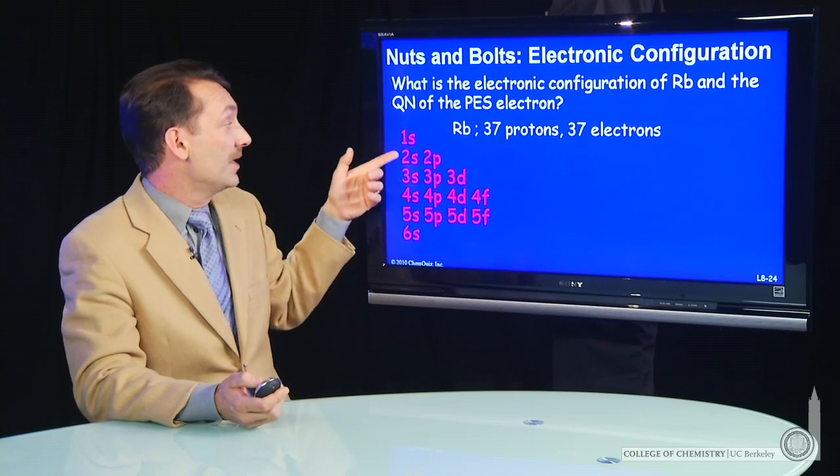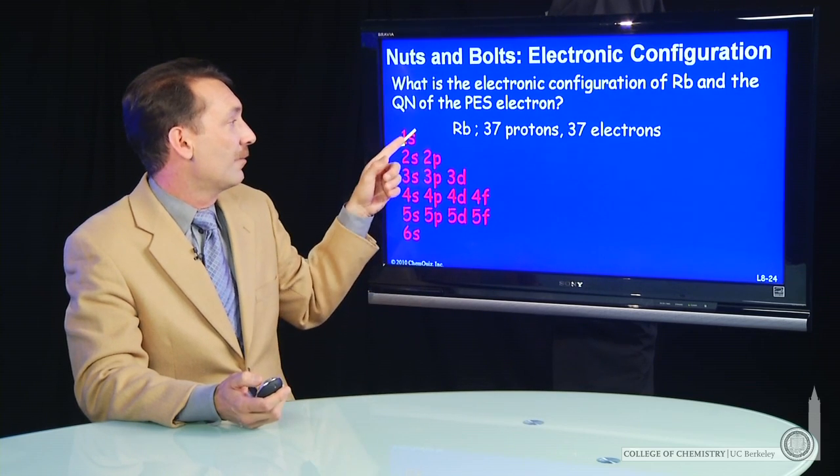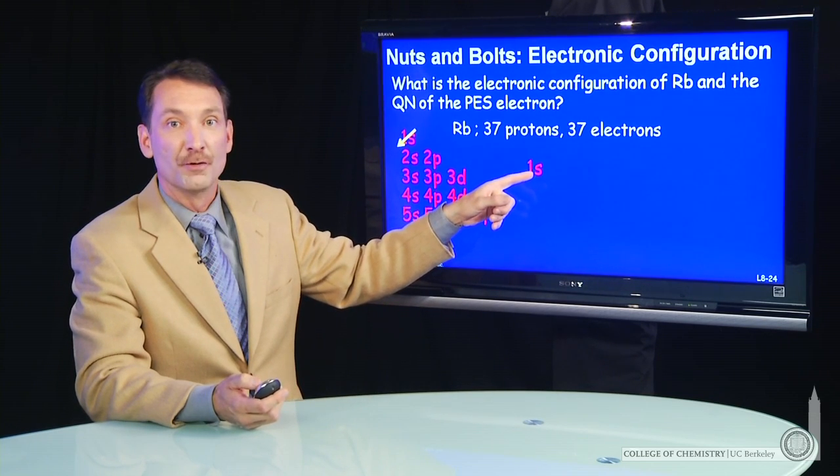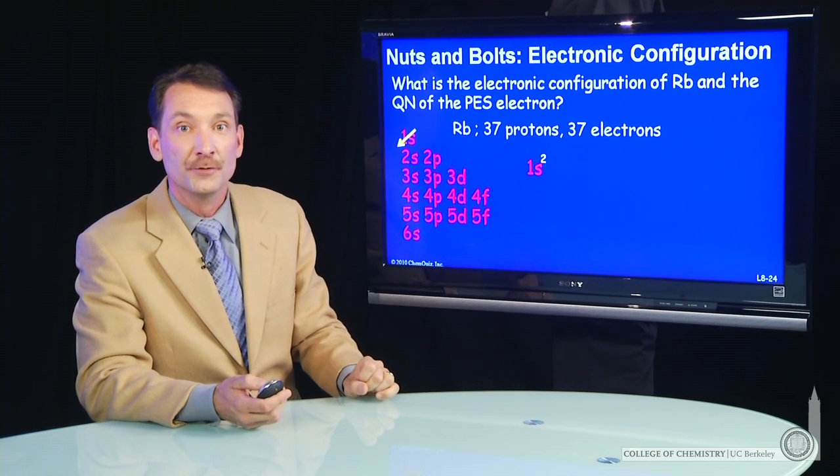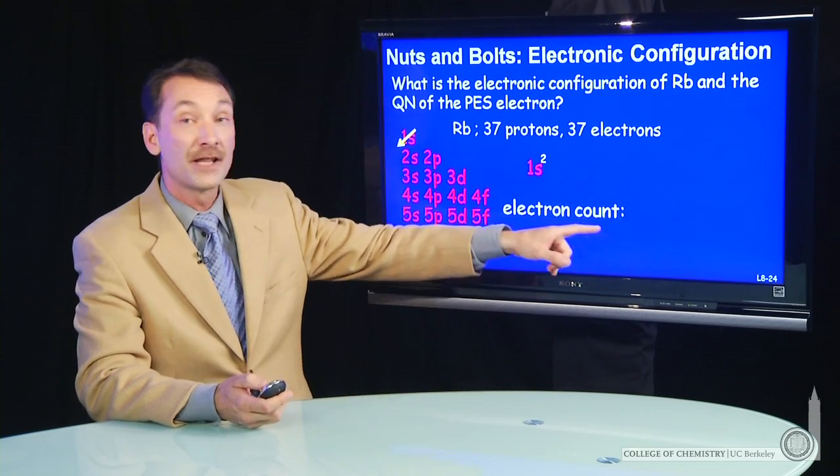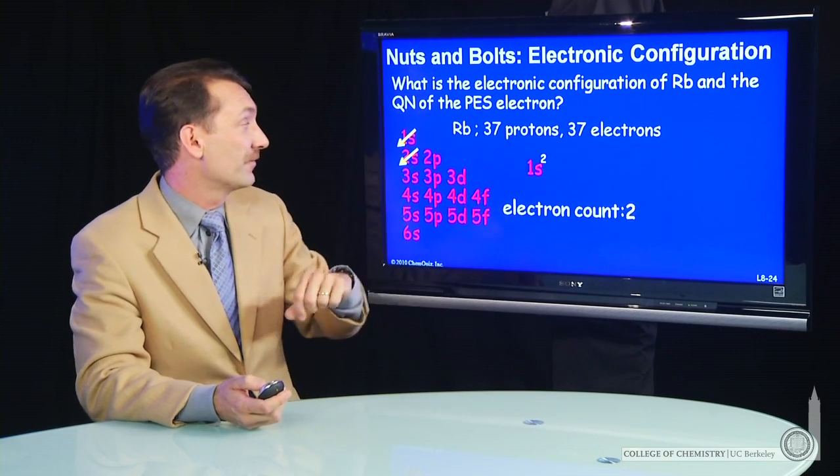Now all we have to do is go through that and count up to 37 electrons. So we can do that. 1s is the first orbital we'll fill, and the 1s will hold two electrons. So 1s2. We can keep a total electron count so we remember when we get to 37. So far we have two electrons.